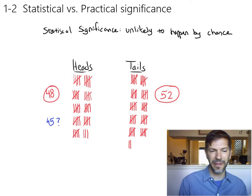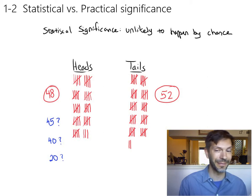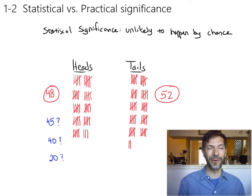Or maybe suppose I only got 40 heads. How about if I only got 20 heads? At least by this point down to 20, you're probably at that point definitely believing something's wrong with the coin. It's not a 50-50 coin anymore.